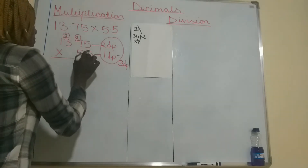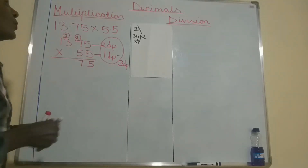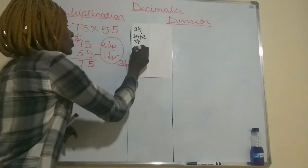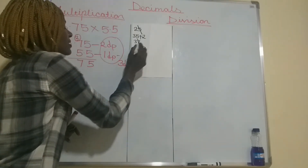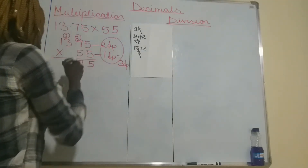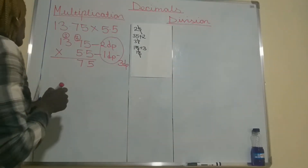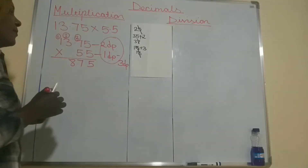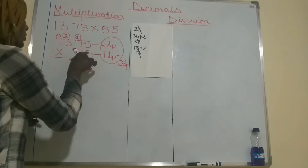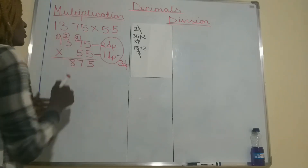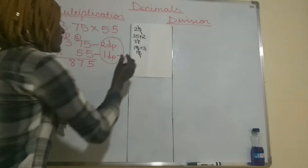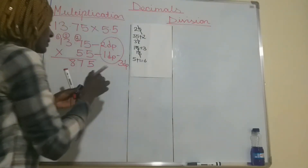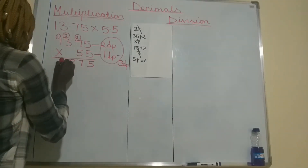Continue the multiplication: 5 multiplied by 3 is 15, plus the 3 you carried gives you 18. The 8 you put here and the 1 you carry to the next number. Then 5 multiplied by 1 gives you 5, plus the 1 you carried gives you 6. So that 6 you write there.